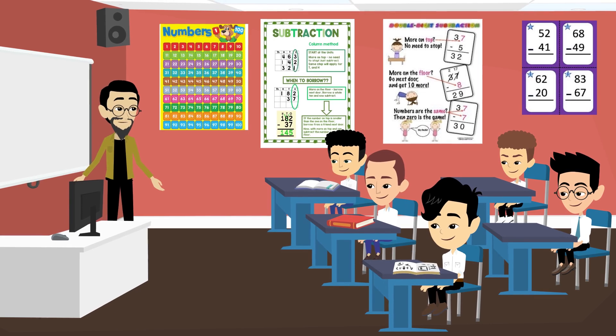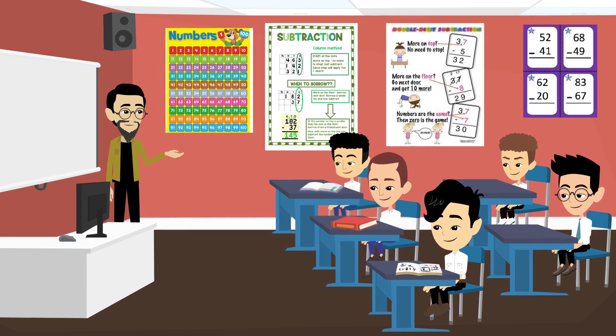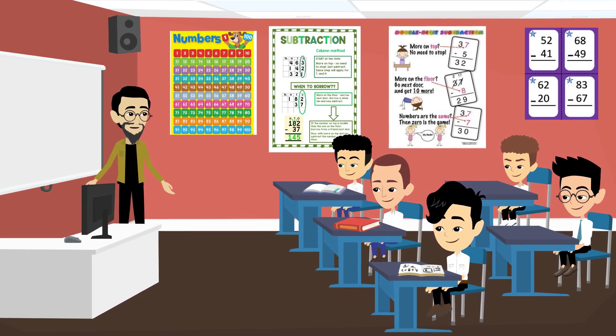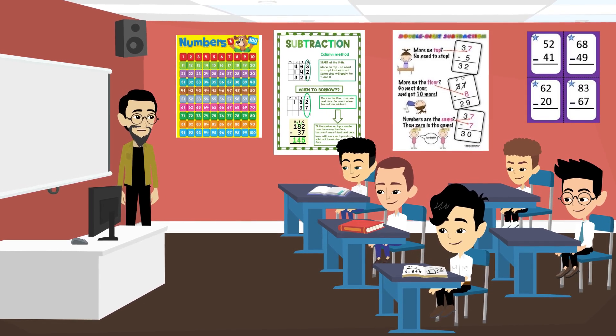When we need to borrow because the top number is smaller than the bottom number, we regroup. Let's see how it works with an example.